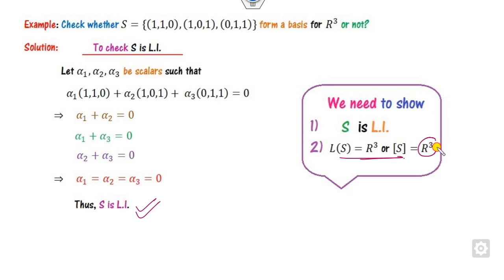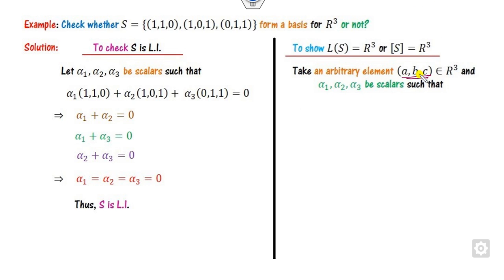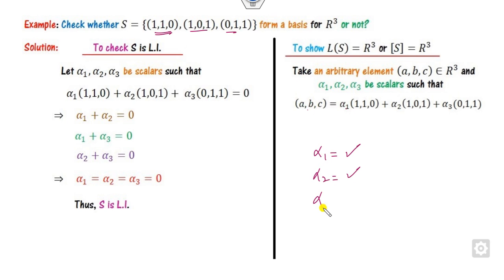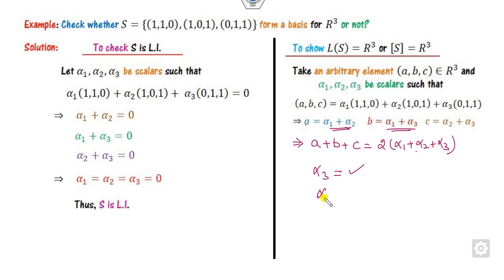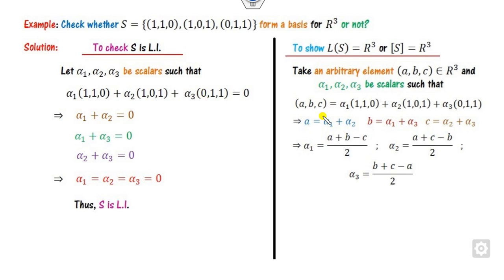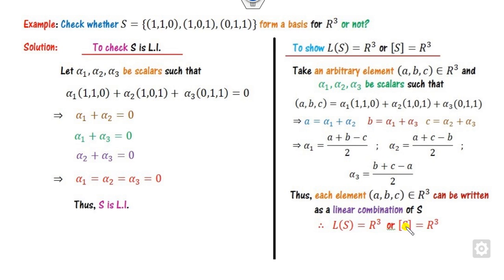Second, to prove span: take any element V = (A, B, C) in R³ and write it as a scalar multiple of the elements of S. Our target is to find alpha 1, alpha 2, and alpha 3 in terms of A, B, C. If you add the equations you get twice of alpha 1 plus alpha 2 plus alpha 3. Substituting the value A, you can find alpha 3, then alpha 2, and so on.